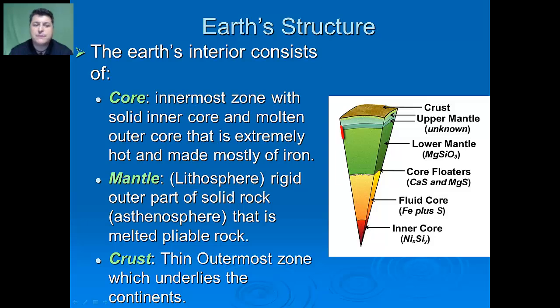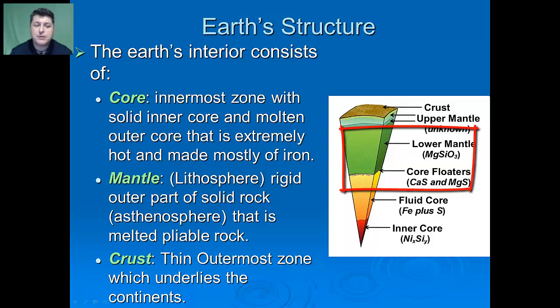The mantle is what makes up most of our lithosphere. It's going to be the rigid outer part of solid rock, and then also a molten portion called the asthenosphere that's melted and pliable.